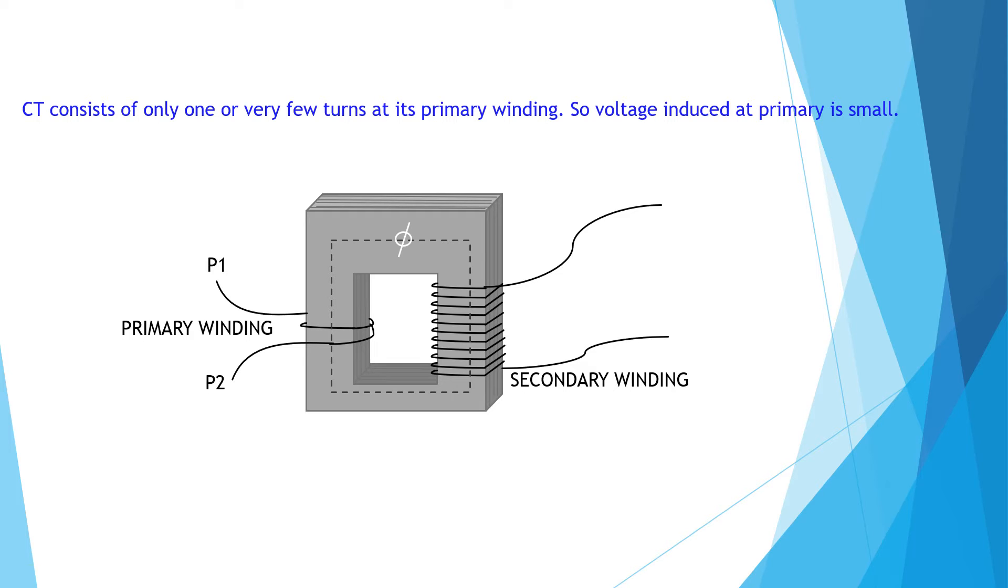Flux created due to small induced voltage at primary is phi, which links with secondary winding and creates a flow of secondary current Is when the secondary is short circuited.